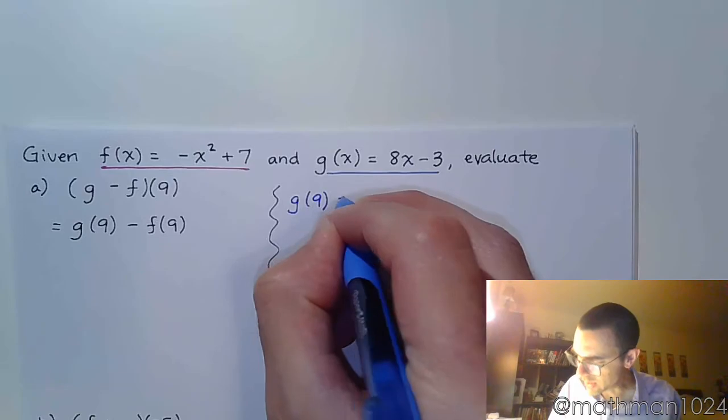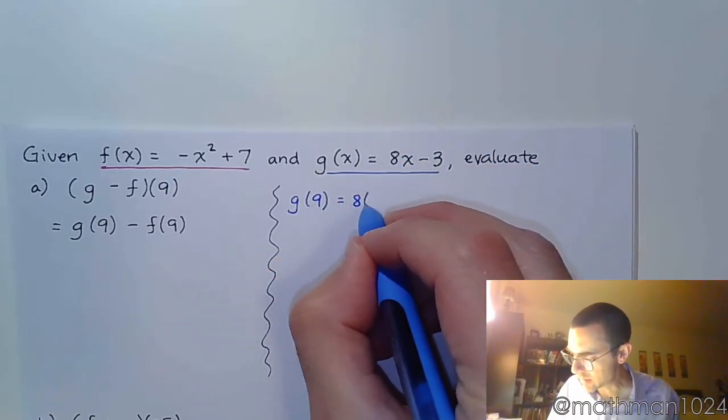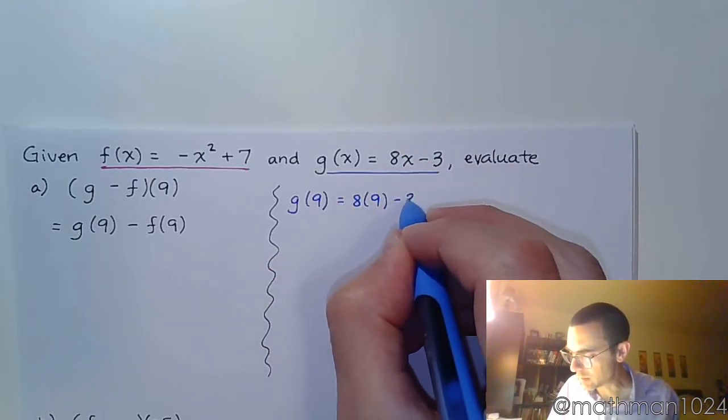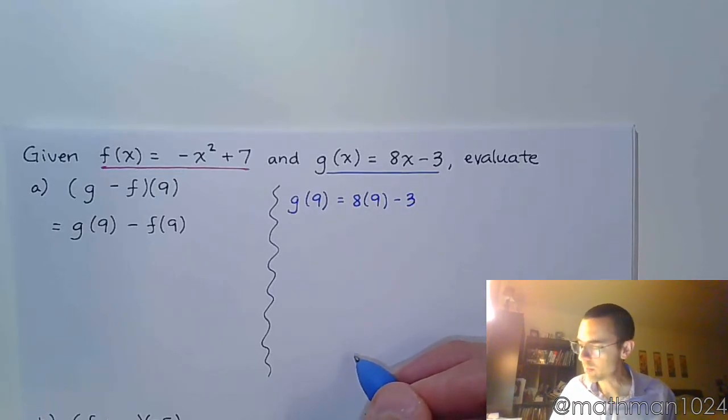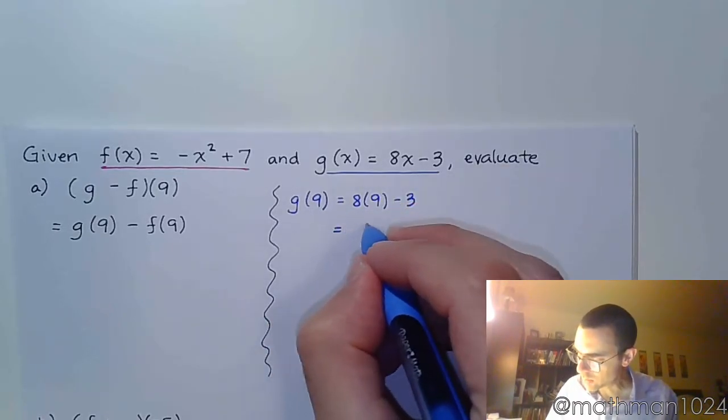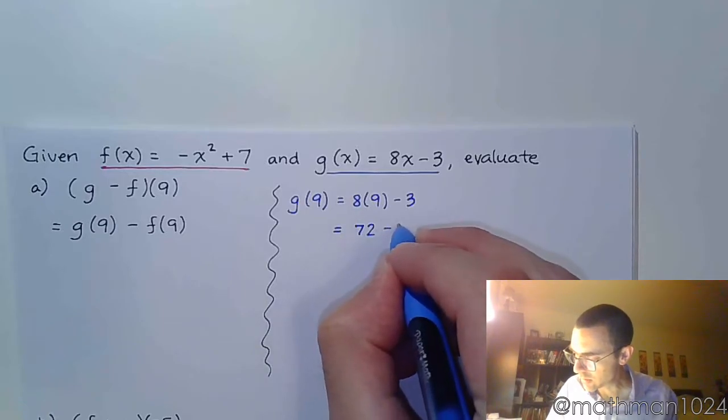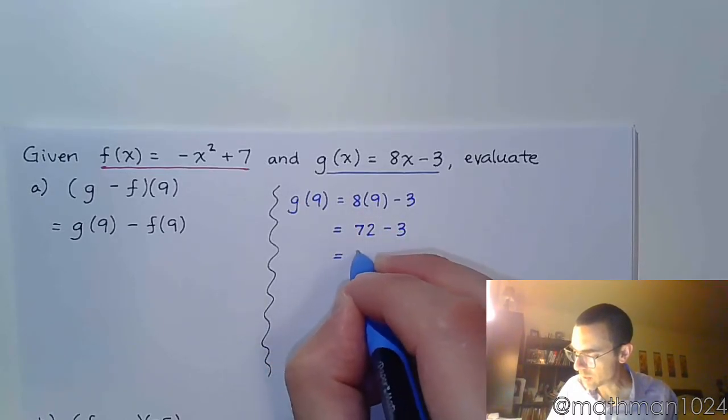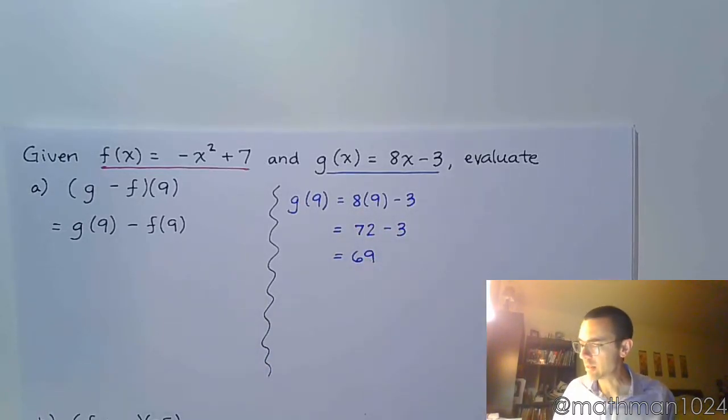So g of 9 equals, just using this guy right here, that's 8 times 9 minus 3. This is equal to 72 minus 3, which equals 69. But we're not done. We did one evaluation, now we have to do the other one. We need to find f of 9.